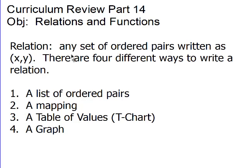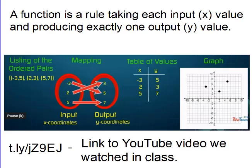There are four ways to write a relation. You can have a list of ordered pairs, you could have a mapping, you could have a table of values which we also call a t-chart, and you could have a graph. Each one of those deals with that X, Y relationship. Now in order for a relation to be a function, it has to meet certain conditions.